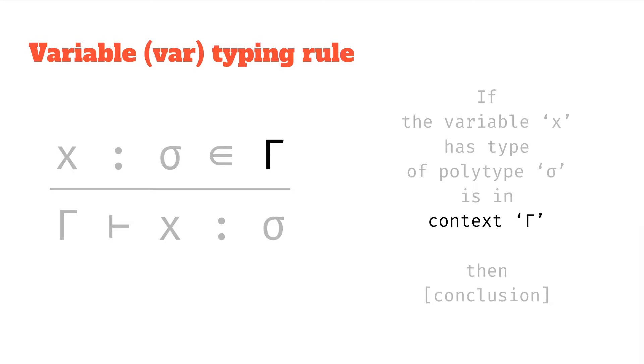And so that first premise, the top half, means if the variable x has type, a polytype sigma is in context gamma. So that's quite wordy, quite clunky, but it will start to make sense as we get through it.